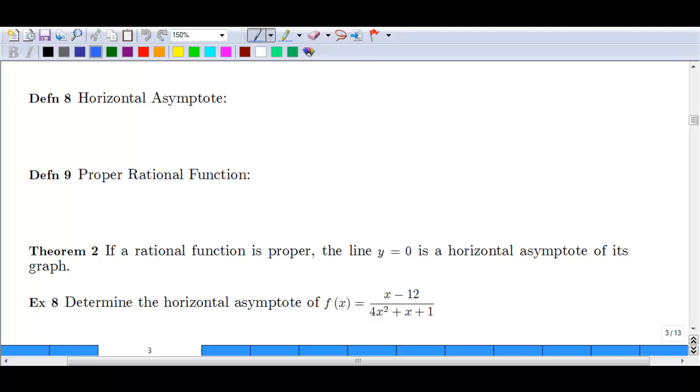This next section is going to discuss horizontal asymptotes. Now as we discussed previously, vertical asymptotes are very strict. They are vertical lines the graph approaches but never crosses. It can go up to infinity or down to negative infinity, but it's never going to cross that line.